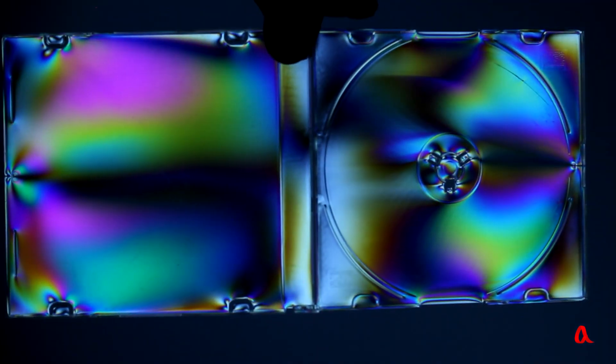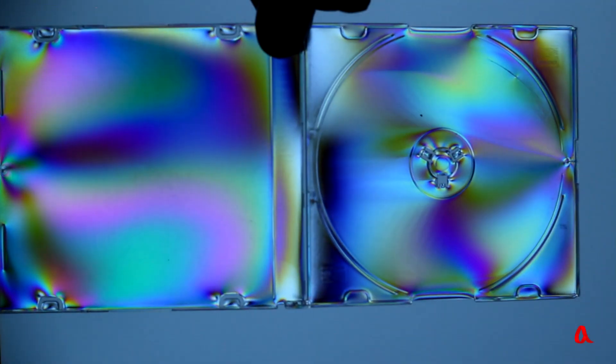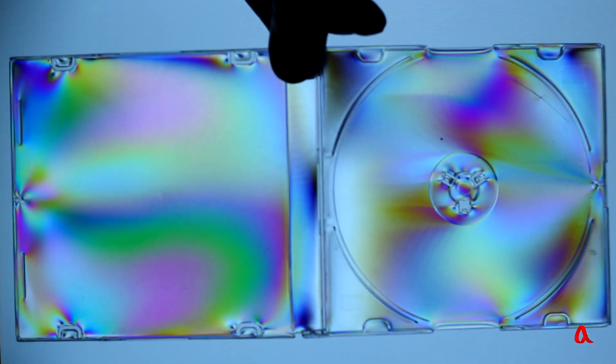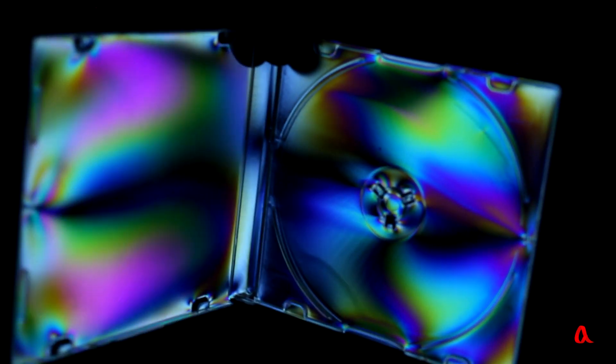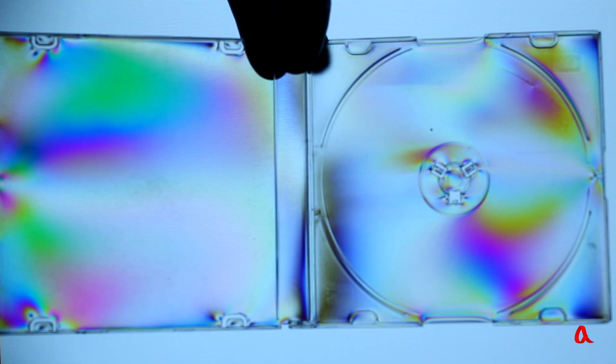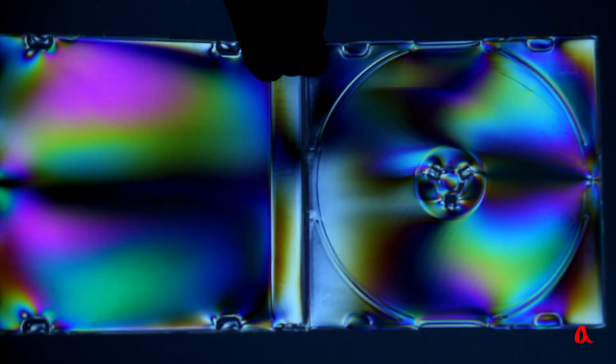This amazing phenomenon is called photoelasticity. Colored stripes that appear when viewed through polarizing filters allow you to see the internal stress of the material that emerged during the solidification of the plastic from the molten state.